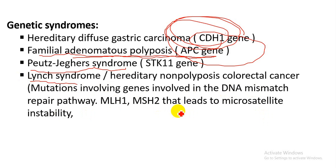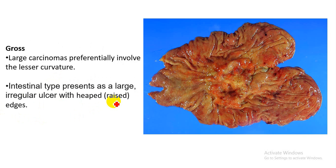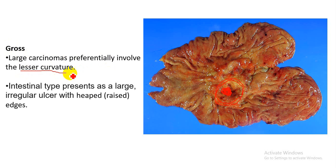The Lauren classification divides gastric adenocarcinoma into two types: intestinal type and diffuse type. Looking at the gross features, you can see the tumor is ulcerated with a raised margin. Cancer is mainly present in the lesser curvature of the stomach, and the intestinal type presents with a raised margin.